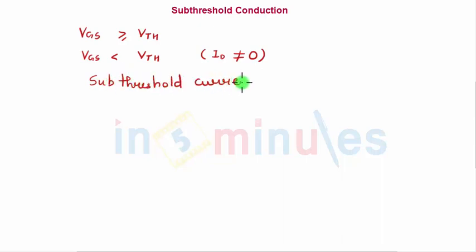In simple words, technically we want our ID to be zero when VGS is less than VT, but that does not happen because the current does not drop off linearly to zero but drops down exponentially. This presence of small, weak, finite current, which is the leakage current, is the sub-threshold current and the condition when this takes place is sub-threshold conduction.